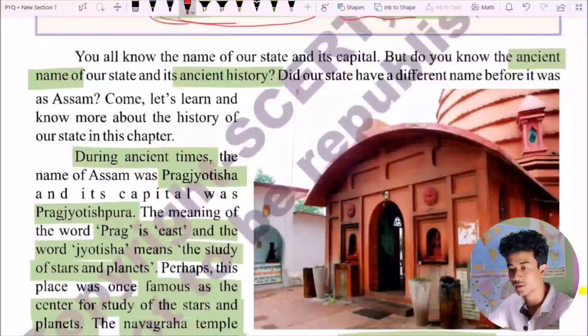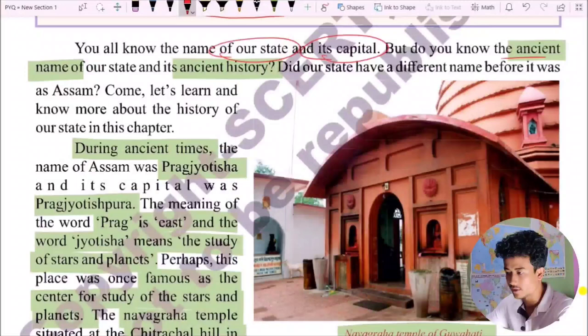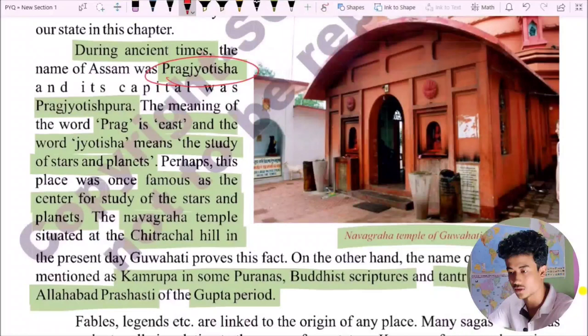You all know the name of our state. Our state is Assam. However, our state had a different name before it was called Assam. During the ancient time, the name of Assam was Pragjyotisha, and its capital was Pragjyotishpura.